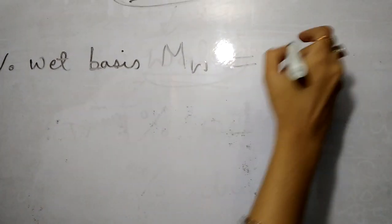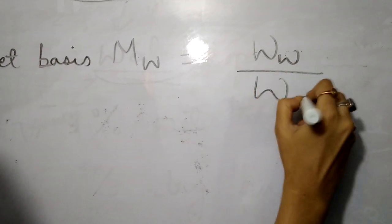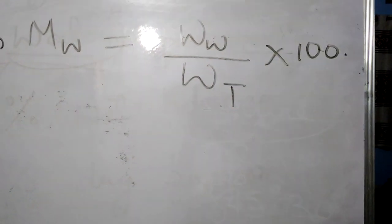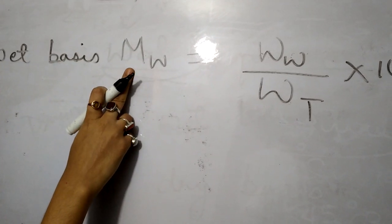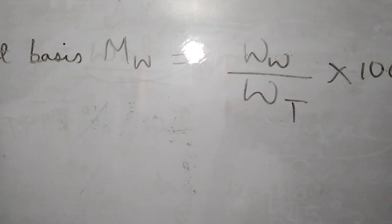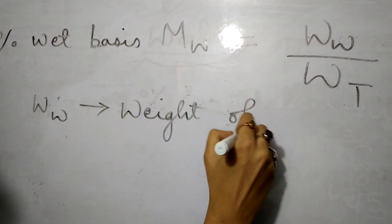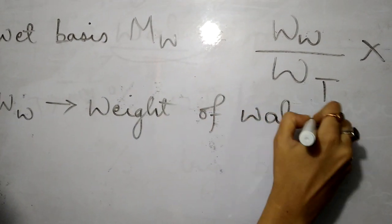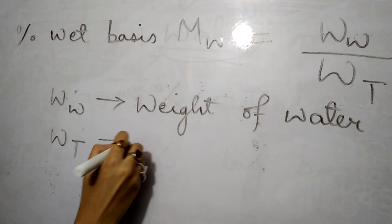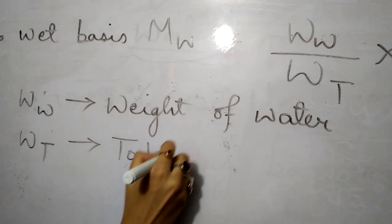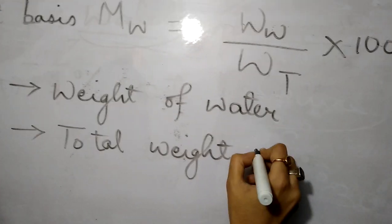If moisture is represented on percentage wet basis, it is written as Mw. Mw is equal to Ww divided by Wt into 100. Here, Mw is the percentage moisture content on wet basis. Ww is the weight of the water present in the sample — it can be in kg or grams. Wt is the total weight of the sample.